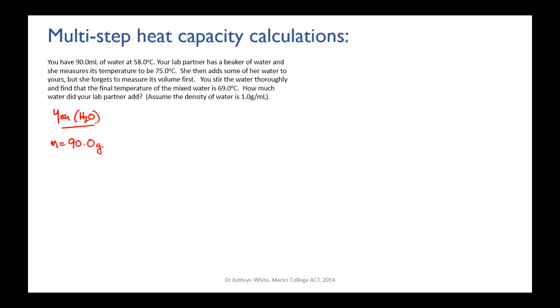We know that its initial temperature is 58.0 degrees Celsius. We know that its final temperature once it's been mixed with the other water is 69. And from those two things we can work out delta T: 69 minus 58 equals 11 degrees Celsius. Don't forget that point zero, it's an important significant figure.